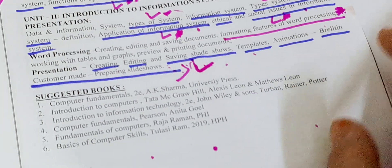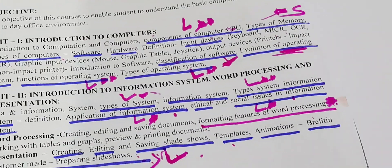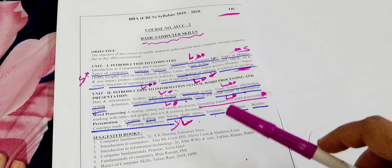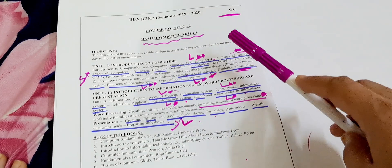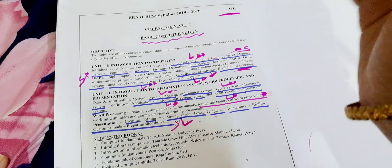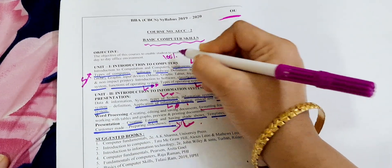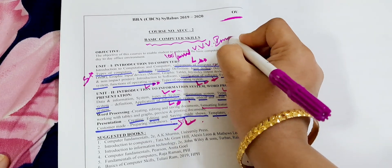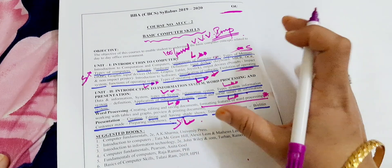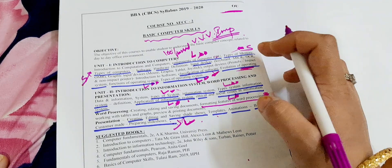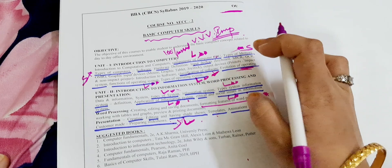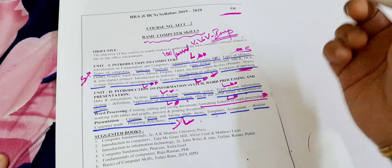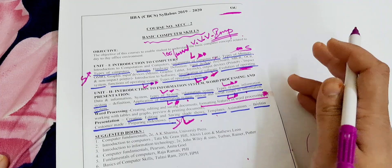So we have discussed both units of Basic Computer Skills for BBA first year, second semester at Osmania University. If you learn these two units, you will get hundred percent passing marks. I am very confident because I have given you each and every important question — your paper will come from these questions only. All the best for your exams. Thank you so much for watching. If you have any queries, ask me in the comment section.